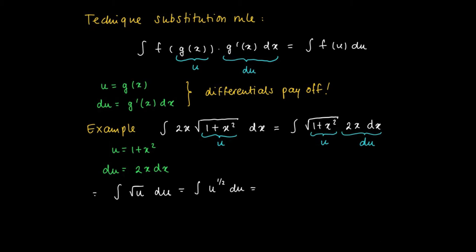And this is an integral that we can solve. So this equals the integral of u to the power 1/2, of which we know the primitive. The primitive of this function is 2/3 u to the power 3/2 plus c.